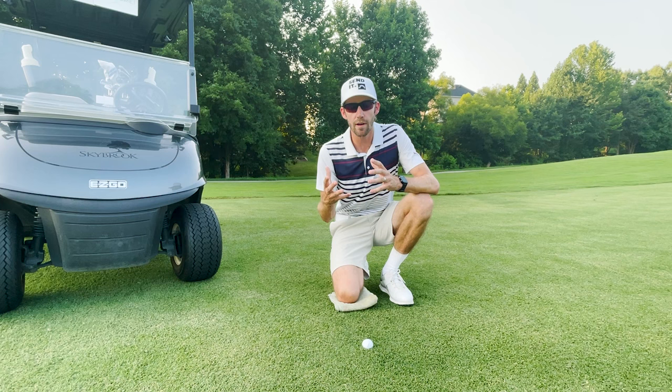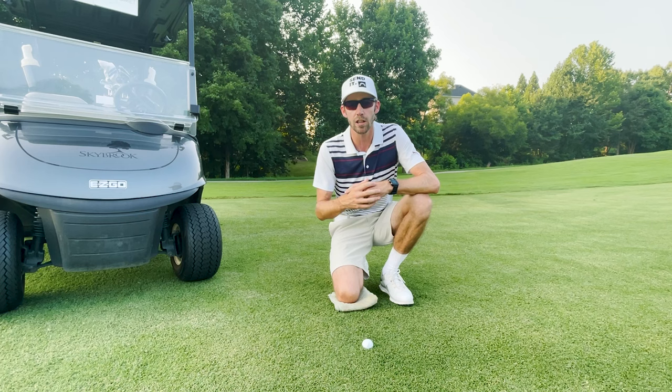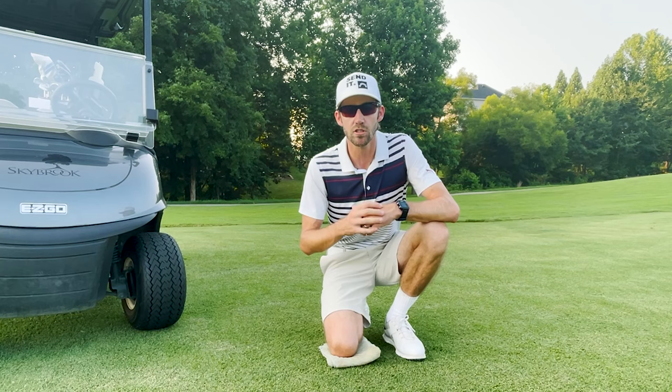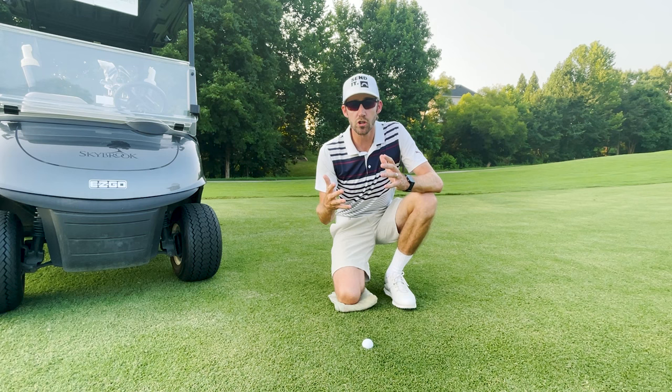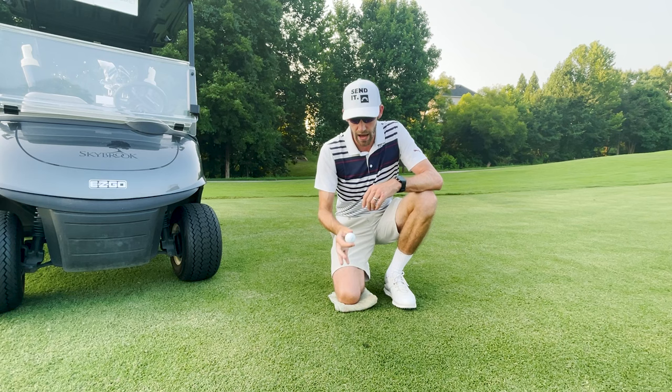We've determined the ball has moved due to an outside influence. Under Rule 9.6, whenever a ball is moved by an outside influence, all we have to do is replace the ball back on the original spot. Rule 9.6 also points us to Rule 14.2, which gives additional guidance on exactly how to replace the ball. We need to use the original ball — there are four exceptions that allow substitution, but none apply here; I'll list those in the description below. I'm going to pick this ball up — no need to mark anything — and clean it off a little bit, as the rules allow.